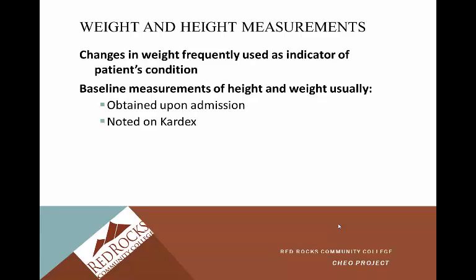Changes in weight are frequently used as an indicator of a patient's condition. Specifically, somebody who has congestive heart failure — we're going to want to see if they're having weight changes and whether they're retaining fluid. Somebody given certain medications like a diuretic that increases urine output, we're going to want to find out what their weight status is and how it relates to their condition. It's an important measurement used frequently to determine the patient's overall health status.